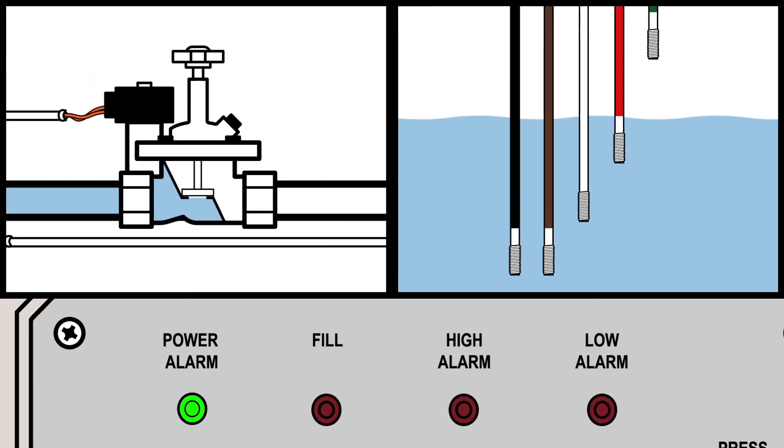Operationally, the valve opens when the water drops below the white rod, and the LED for fill turns on along with the respective relay and dry contact. The valve closes when the water reaches the red sensor rod.